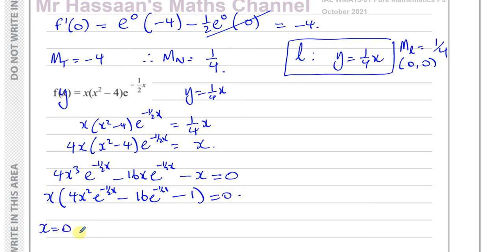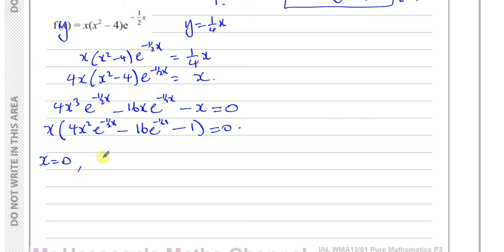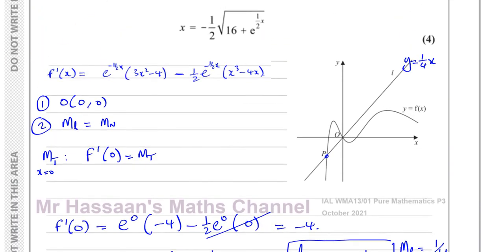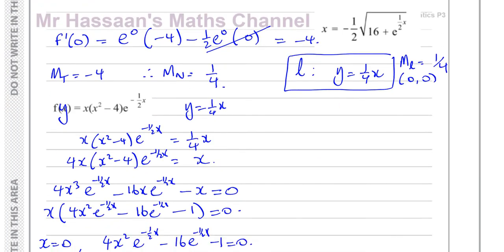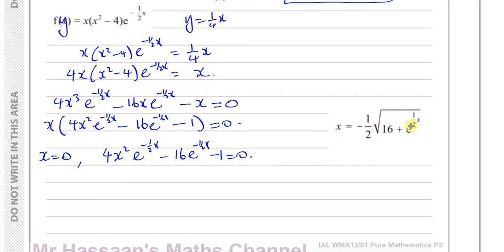So either x equals 0 — which we already know is the intersection at the origin — or the other intersection point P satisfies 4x squared e to the power of minus a half x minus 16 e to the power of minus a half x minus 1 equals 0. I notice the answer involves a square root and e to the power of a half x, so we're likely making x squared the subject. This is setting it up for an iterative solution, which will probably be part C.